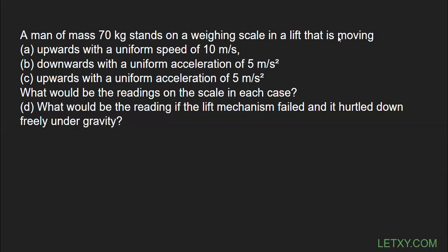Today we have another question: a man of mass 70 kg stands on a weighing scale in a lift that is moving — part A: upward with a uniform speed of 10 m/s; part B: downward with a uniform acceleration of 5 m/s²; part C: upward with a uniform acceleration of 5 m/s². What would be the reading on the scale in each case? What would be the reading if the lift mechanism failed and it hurtled down freely under gravity?